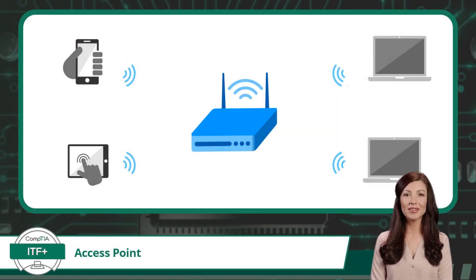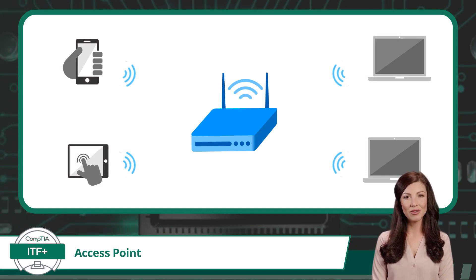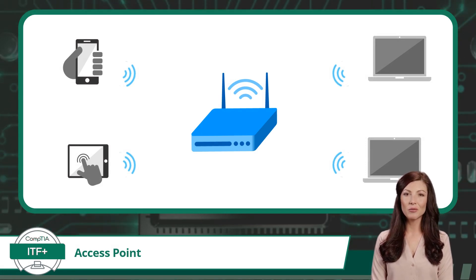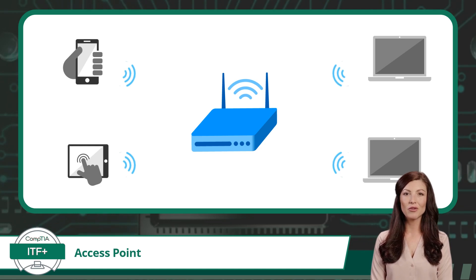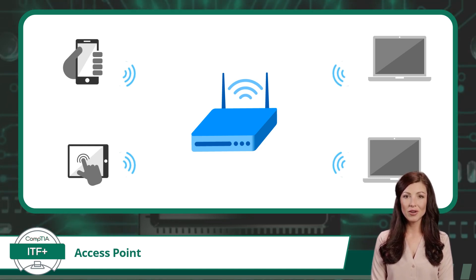Think of a wireless access point as a central hub that enables wireless connectivity. It acts as a bridge between devices and the network, creating a wireless connection for them to communicate with each other.